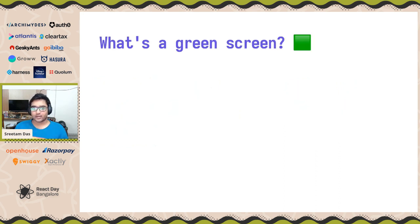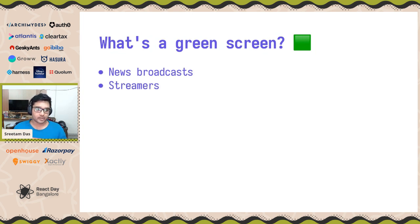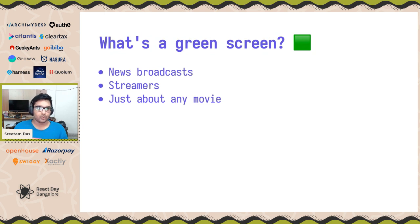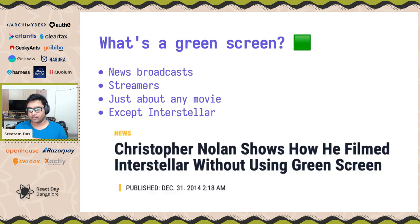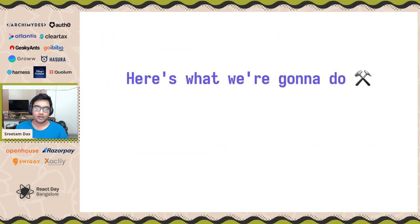So what exactly is a green screen? The basic idea is you're trying to remove the background from a subject of a photo or a video. If you've seen news broadcasts, streamers on Twitch, or pretty much any movie, you know what a green screen is — except Interstellar. Interstellar didn't have any green screens. Pretty cool.